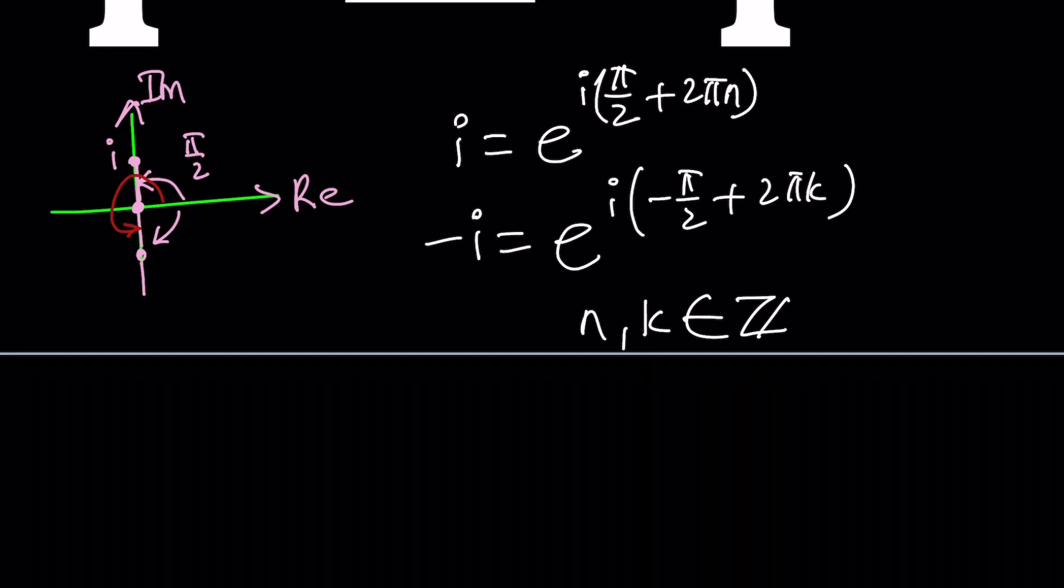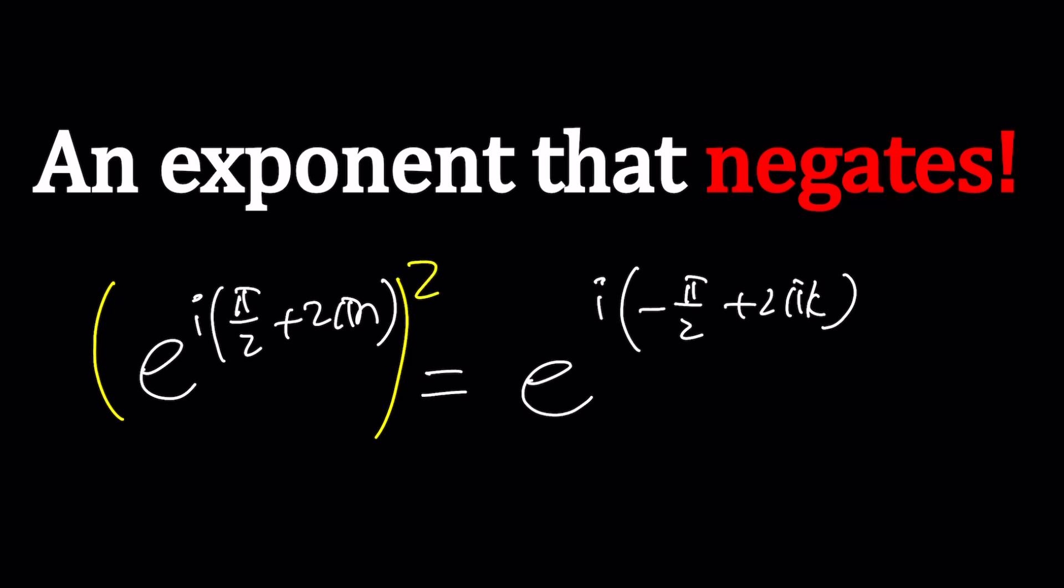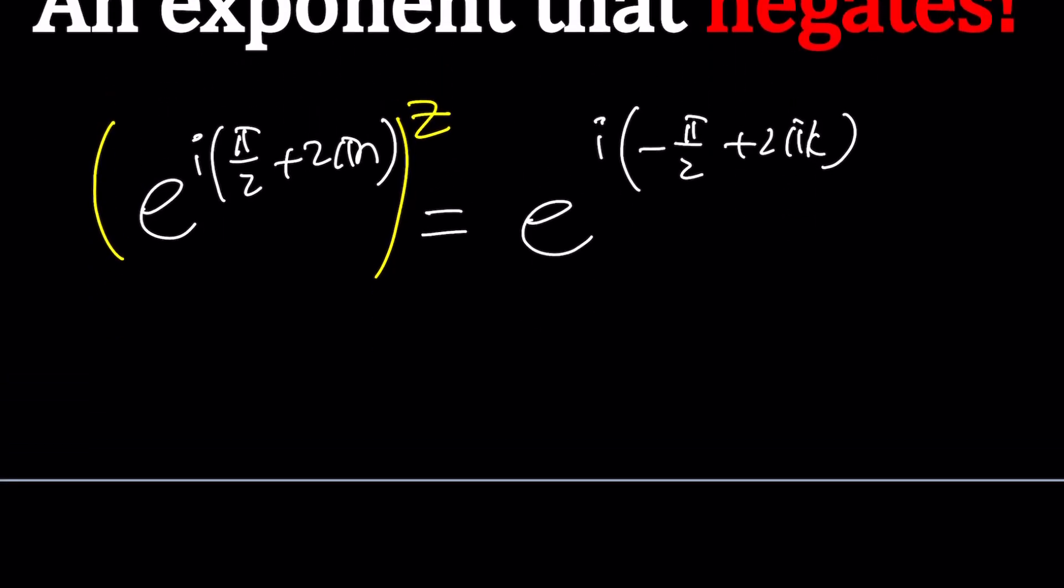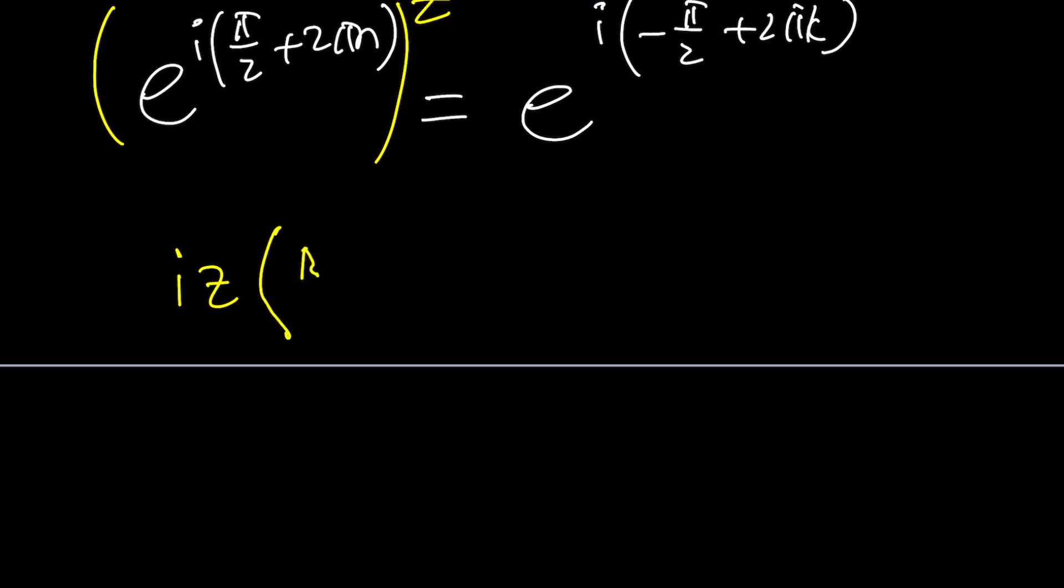Now, let's go ahead and plug these in. I will be replaced with that e to the power i pi over 2 plus 2 pi n. And on the right-hand side, I have e to the power i negative pi over 2 plus 2 pi k. Of course, they're not equal. We're going to raise the left-hand side to the power z, and we expect to get the right-hand side. Wishful thinking. Now, how do you solve for z? First of all, we have to distribute and multiply. And then once you multiply, you're going to get the exponents equal to each other. So let me go ahead and cut down a step there.